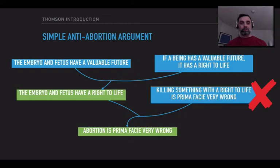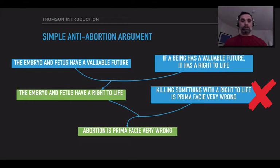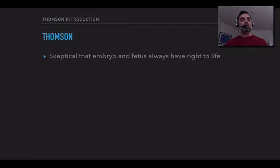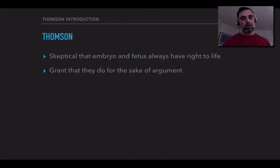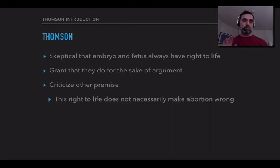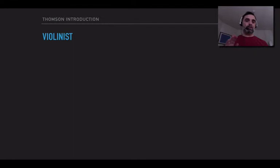She's going to argue that this premise — killing something with a right to life is prima facie very wrong — needs some limitations, and once we limit that premise, the pro-life argument is going to be substantially weakened, and we're going to have a pro-choice argument in its place. On the one hand, she is skeptical that the embryo and the fetus always have a right to life, but she's not going to argue that in this paper. She's going to say: let's suppose that they do always have a right to life for the sake of argument, and she's going to criticize the claim about what it's like to have a right to life. Having a right to life does not necessarily make abortion wrong.